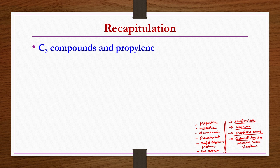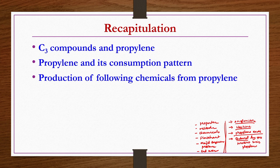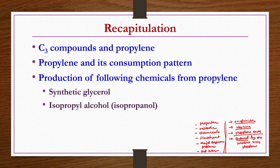Steam cracking of hydrocarbons produces ethylene, acetylene, propylene, propane, butane and related products. We have to do separation to get propylene, as discussed with the help of a flowchart. We also realized the importance of propylene in terms of different intermediate and end chemicals that can be produced from it, shown by a schematic diagram. We discussed production of synthetic glycerol by two processes, isopropyl alcohol or isopropanol, acetone, and cumene.